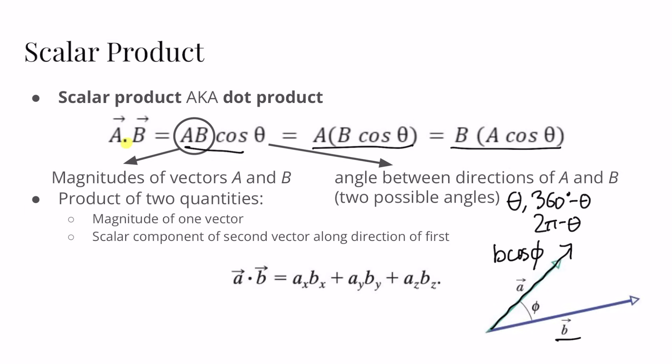We also have an expansion using the components of the two vectors. In the scalar product, you simply multiply the corresponding components together and add them all up: Ax times Bx, plus Ay times By, plus Az times Bz, to get the final dot product. This is because the dot product captures the components that are parallel to each other — if two components are not in the same direction or are perpendicular, they do not contribute to the dot product, and the dot product of two perpendicular vectors is zero.